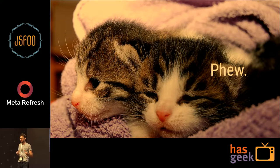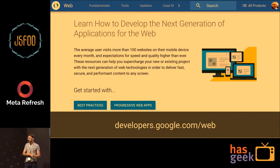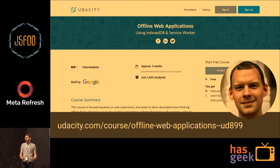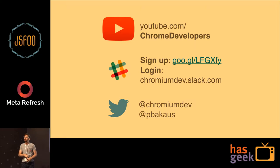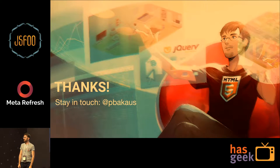So — five steps to get from AMP to PWA. If you want to learn more, go to ampproject.org/docs, developers.google.com/web for general web techniques and progressive web apps, and check out Jake's offline web applications course on Udacity. We also have a YouTube series coming up about AMP, and a Slack where you can ask us questions. Thanks — stay in touch, and we have about four minutes for questions.